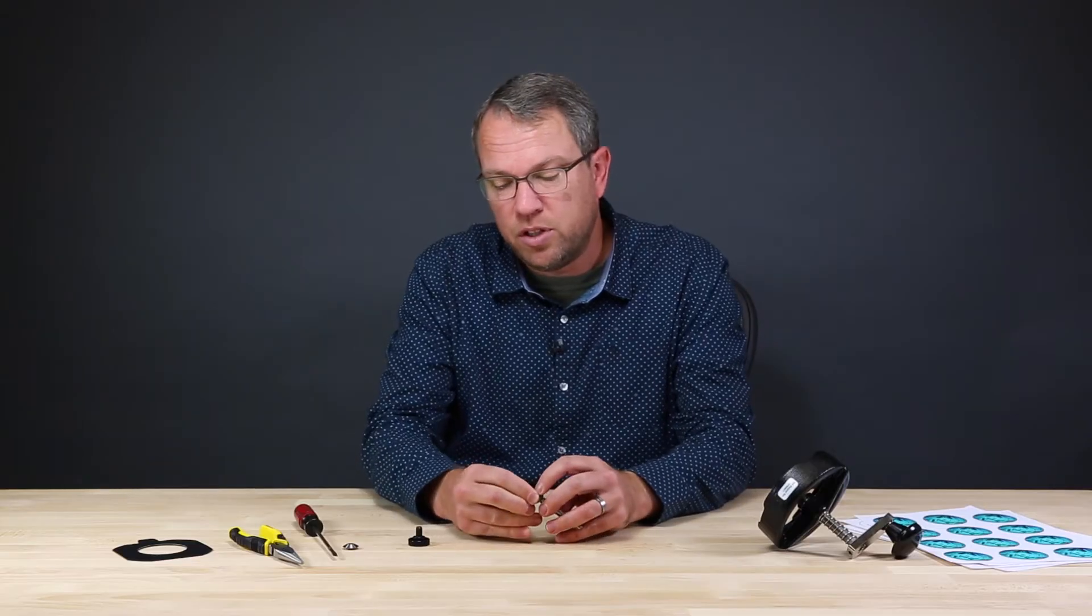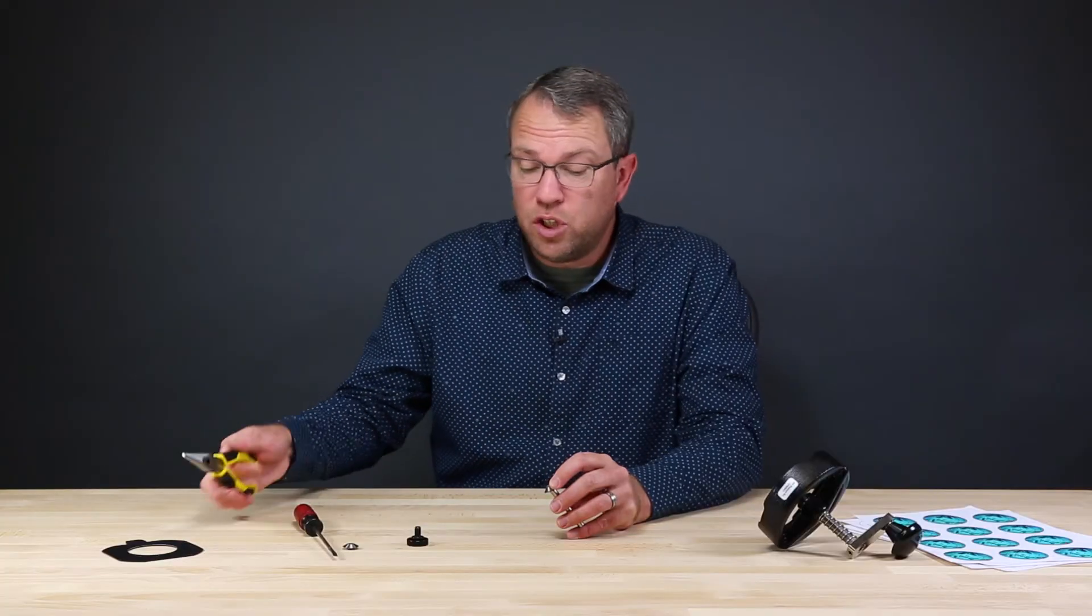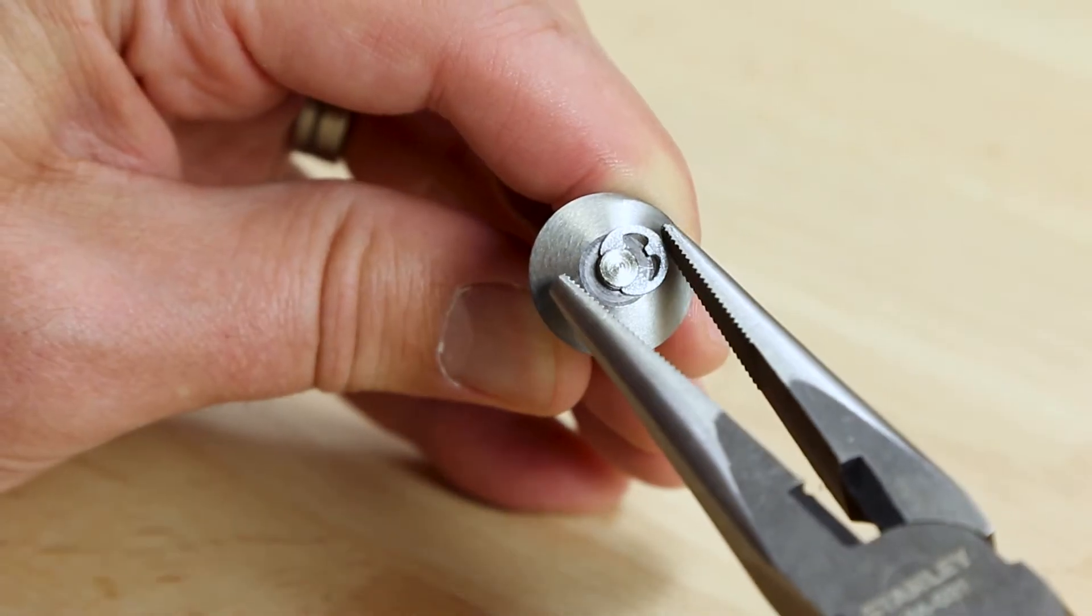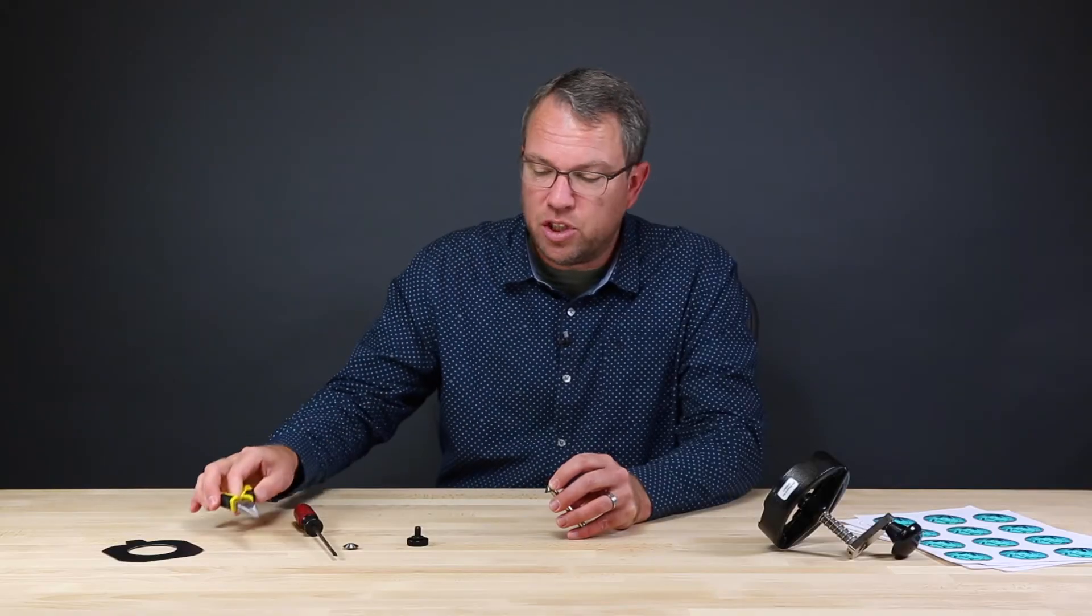I can then place the clip onto the shaft for the cutting blade. I'll then use the needle nose pliers to snap the E-clip back onto the cutting blade shaft.